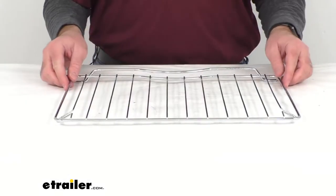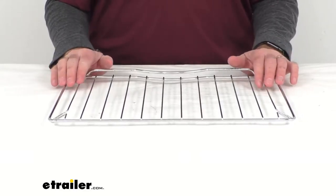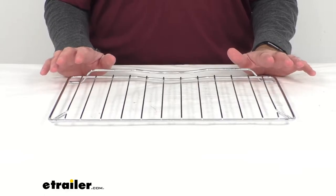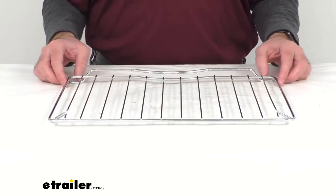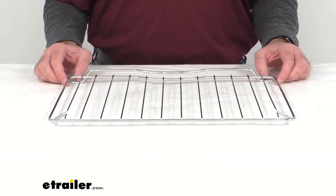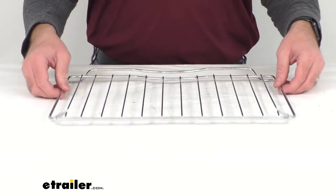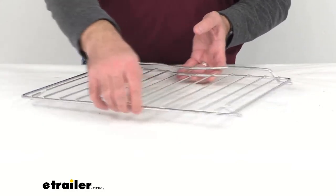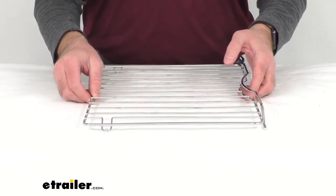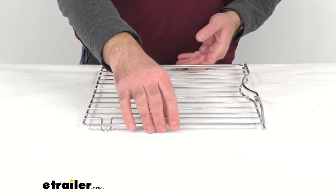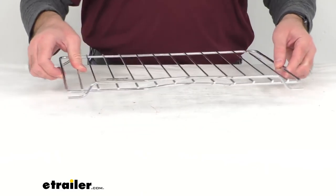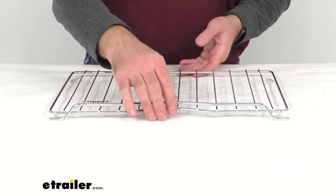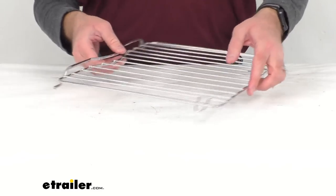This replaces the oven rack for the 2-in-1 range oven of certain model numbers. Those model numbers are FSRE17SABL, FSRE17SS, FSRE21SABL, and finally the FSRE21SS.